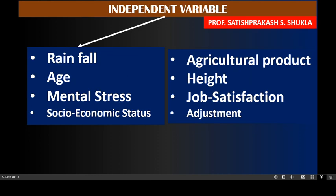Here four pairs of examples are given. In each pair, one variable is the independent variable that affects the other. In the first pair, the two variables are rainfall and agricultural product. We know rainfall affects agricultural product. If proper rainfall occurs, agricultural product will be normal; if more or less than required, the agricultural product will be less. So rainfall is an independent variable.